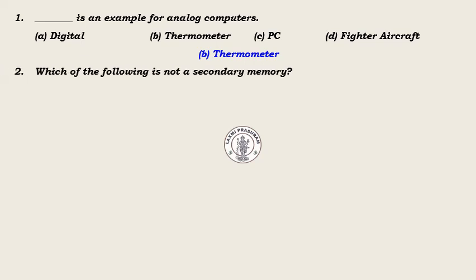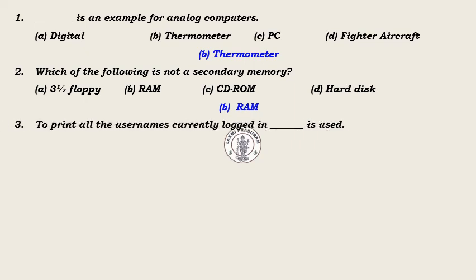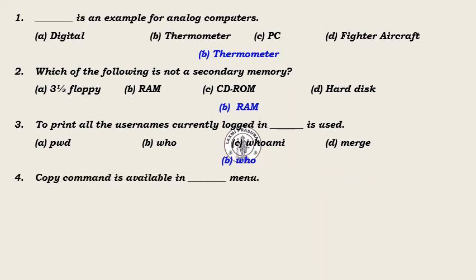Question 2 answer: RAM (RAM is not a secondary memory). Question 3: To print all the user names currently logged in, dash is used — Answer: who. Question 4: Copy command is available in dash menu.